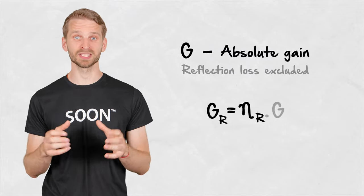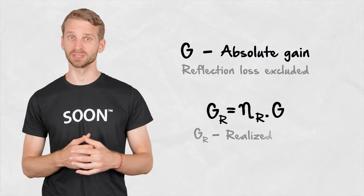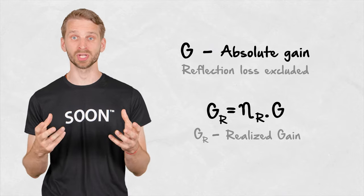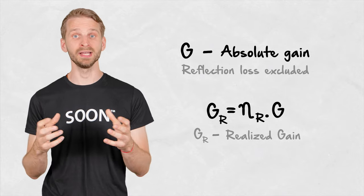Realized gain includes the impedance mismatch on top of the material losses and considers the chain of the feeding transmission line and the antenna together.